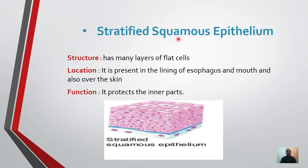Stratified squamous epithelium. These types of tissues have many layers of flat cells. It is present in the lining of the esophagus and mouth, and also over the skin. Function: it protects the inner parts — stratified squamous epithelium protects internal sensitive organs.